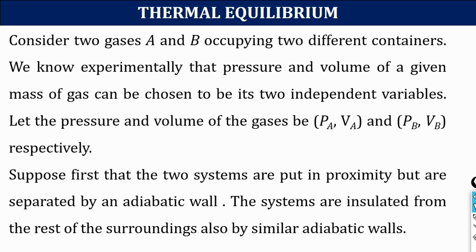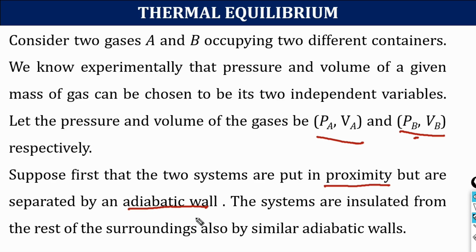Now let us consider two gases, A and B, occupying two different containers. The state of each system is defined by independent variables: PA and VA define the state of system A, and PB and VB represent the pressure and volume of system B. Initially, the two systems are placed in proximity but separated by an adiabatic wall. That means there is no exchange of matter and energy between them, and also both systems are insulated from the surroundings.